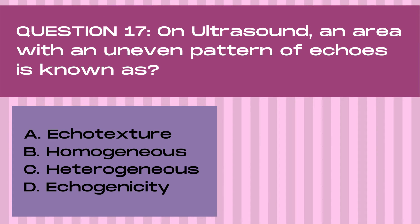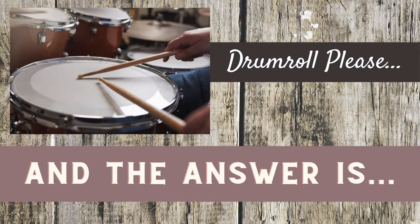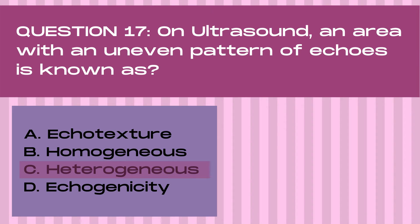Question 17. On ultrasound, an area with an uneven pattern of echoes is known as: A. Echotexture, B. Homogenous, C. Heterogeneous, or D. Echogenicity. And the answer is C. Heterogeneous. Heterogeneous on an ultrasound means that the mass has multiple echogenicities present within the mass, and there's an uneven pattern of brightness of echoes. Looking at the pattern of echoes within a mass is known as echo texture.